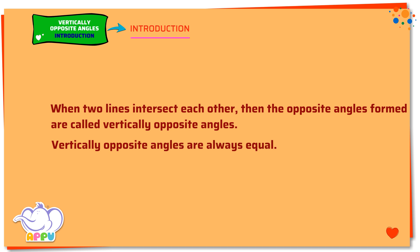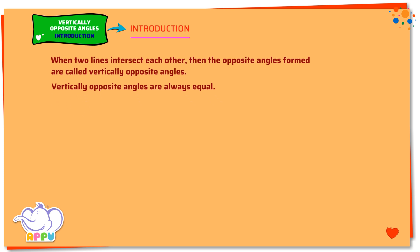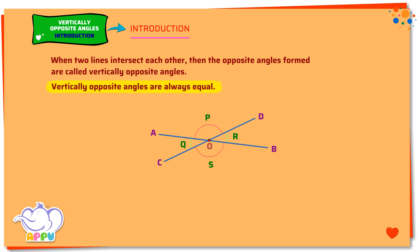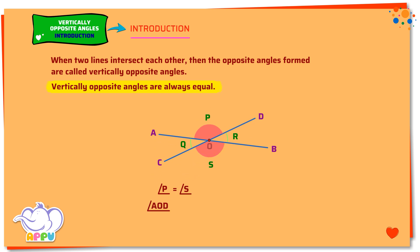Let's see a few examples. In this figure, two straight lines AB and CD intersect at a point O. Four angles are formed at O. Here angle P and angle S are one pair of vertically opposite angles. Angle P equals angle S, which is the same as angle AOD equals angle BOC. These are different notations, but both mean the same.